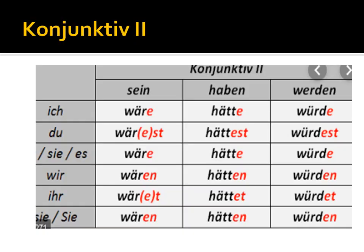This is the table. For 'sein': ich wäre, du wärest, er/sie wäre. Basically first and third person are most used. For 'haben': hätte. And 'würden' — this is the form of 'werden', it originated from 'werden' and becomes 'würden'. So 'haben' in Konjunktiv 2 becomes 'hätte', and 'sein' becomes 'wäre'. With 'würden', you write the infinitive at the last place.